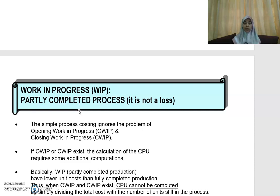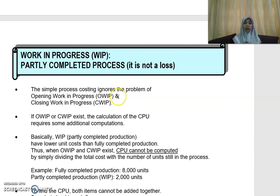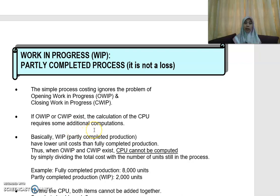It is not a loss. The simple process costing that I've explained earlier ignores the problem of opening work in progress and the closing work in progress. But if you have the opening or closing work in progress, then the calculation of a cost per unit requires some additional computation.